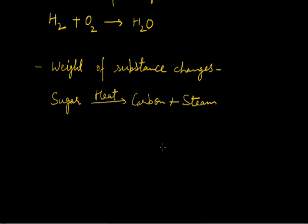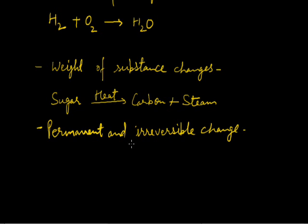But apparent weight changes. The next property is changes are permanent and irreversible. It means generally change will not be reversed by altering the experimental conditions. Once chemical change has occurred, it would remain in the product form. Once the chemical change has occurred, the product form would be stable. They will not change back into reactants. Such changes are permanent and irreversible. For example, sugar which has been decomposed on heating to form carbon and steam will not change to sugar back on cooling.